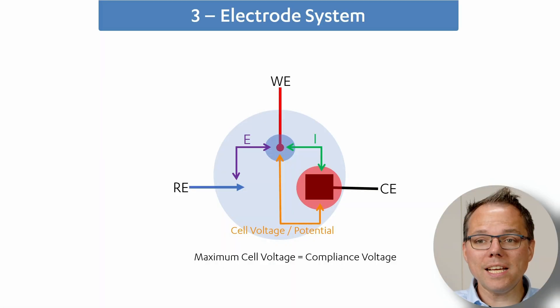In a two-electrode system, the applied potential and the cell voltage or cell potential will be the same. In our three-electrode system, the potentiostat chooses this potential between the working and counter electrode for you. The maximum voltage that you can have in this situation, that is the compliance voltage. So the compliance voltage is the maximum potential you can have between working and counter electrode.